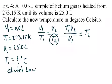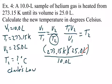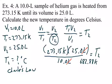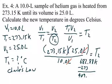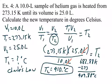Substituting: 273.15 K × 25.0 L ÷ 10 L. The liters cancel and T2 comes out in Kelvin: 682.88 K. But they want the answer in Celsius, so subtract 273 to get 409.88, which rounds to 410. °C (with a decimal point to make that zero significant). That is the final answer in Celsius.